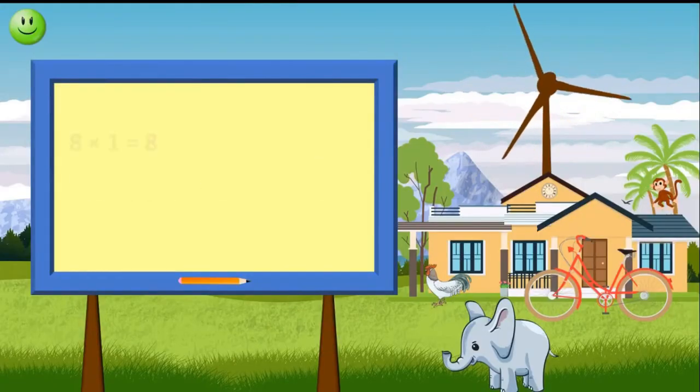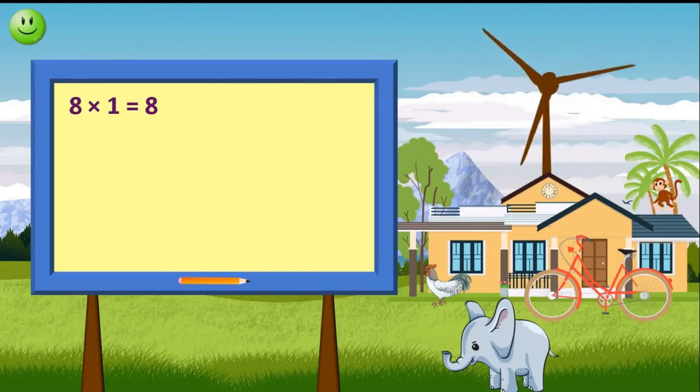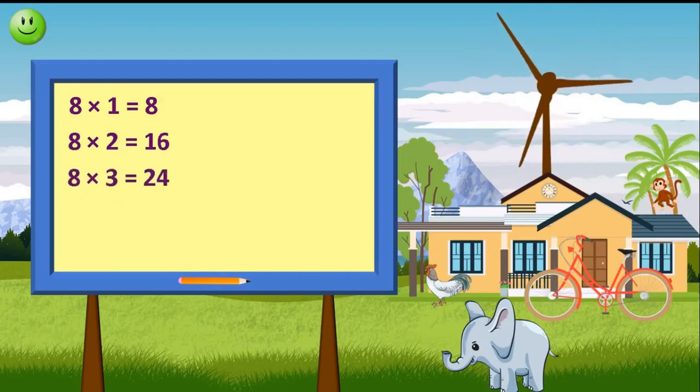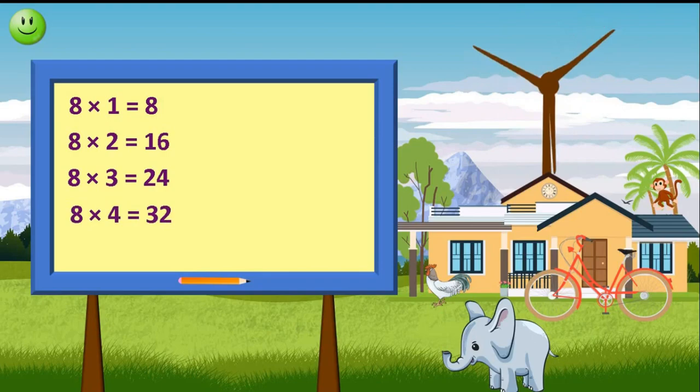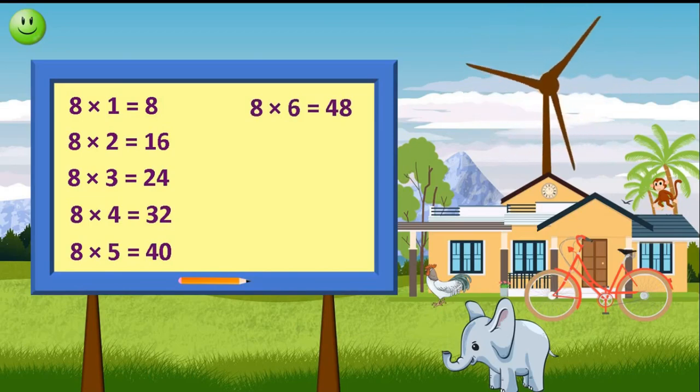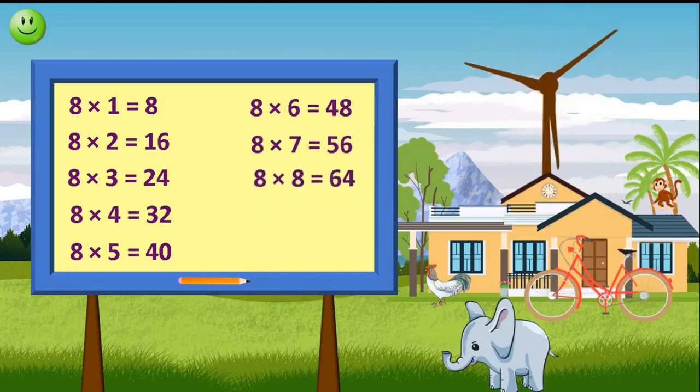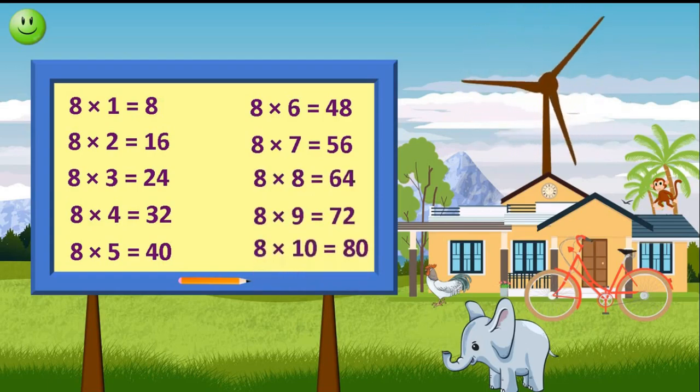Learn 8 tables. 8 times 1 equals 8. 8 times 2 equals 16. 8 times 3 equals 24. 8 times 4 equals 32. 8 times 5 equals 40. 8 times 6 equals 48. 8 times 7 equals 56. 8 times 8 equals 64. 8 times 9 equals 72. 8 times 10 equals 80.